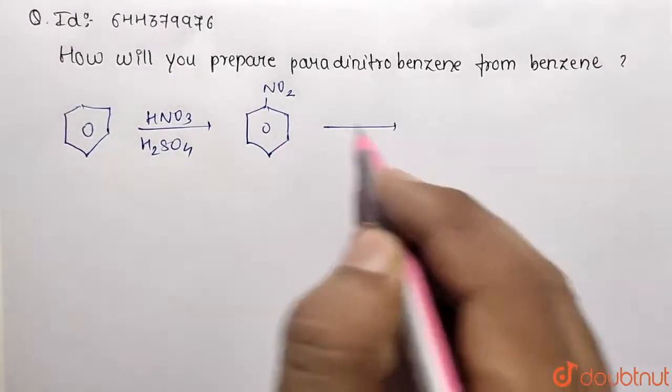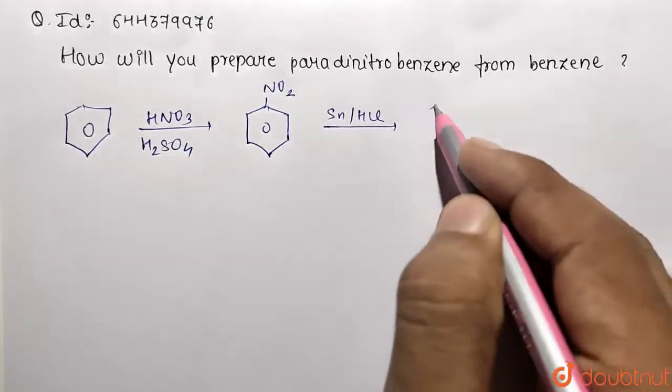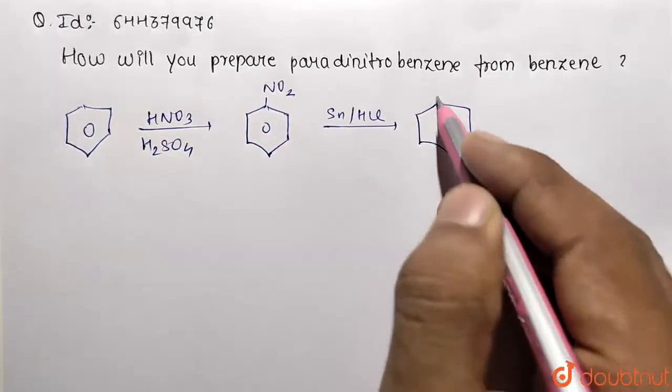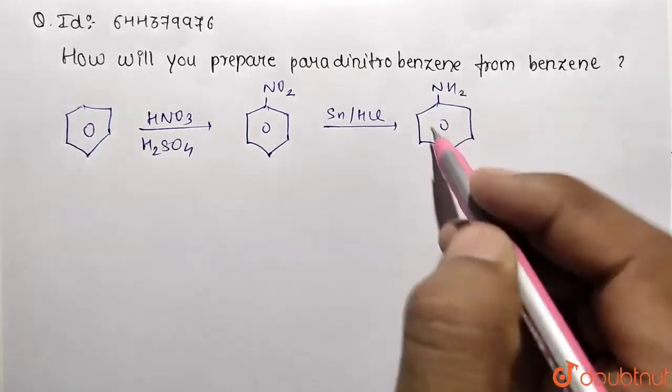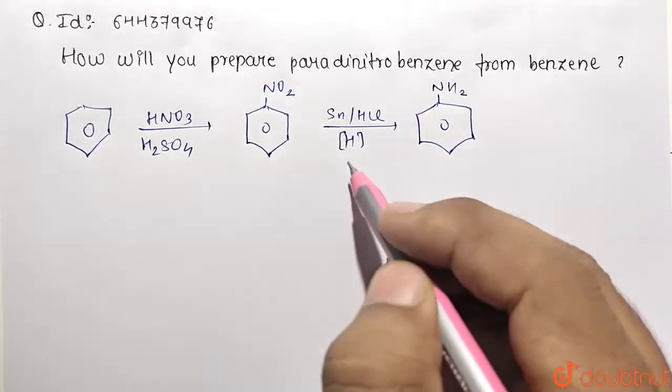Now what you need to do, you need to do reduction. So for that we are going to take Sn with the presence of HCl. So this is being converted to corresponding aniline molecule. So this is NH2 over here after reduction. So reduction can be shown with the presence of nascent hydrogen.